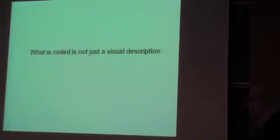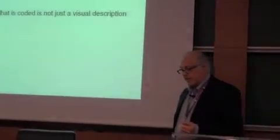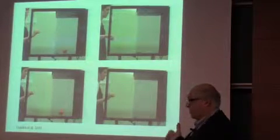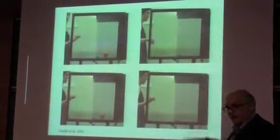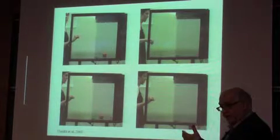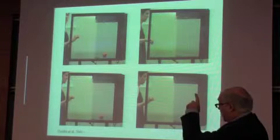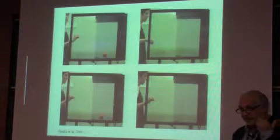However, what is coded is not just a visual description of what the individual observes. I want to show a specific experiment addressing this issue. There are two conditions: from the monkey's perspective, in the first condition the experimenter grasps an object in full vision; in the second condition, after object presentation, a screen is interposed and the motor act is performed in the same way but behind the screen. You can hear the activity of this mirror neuron from the noise.